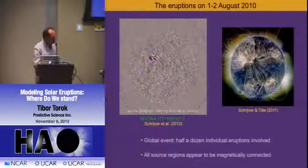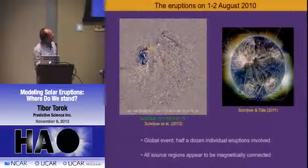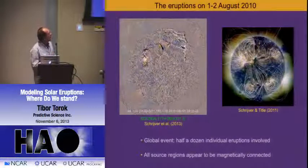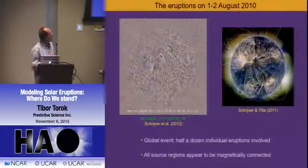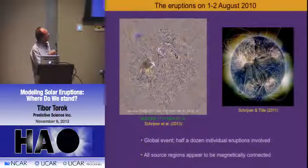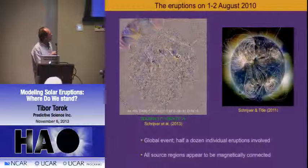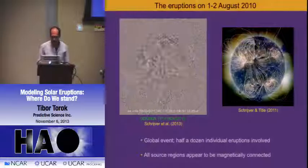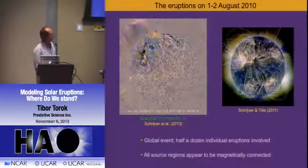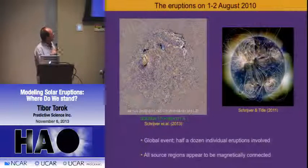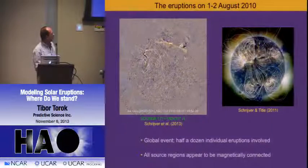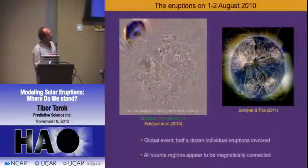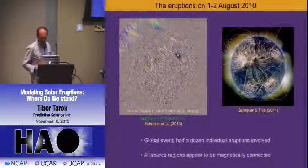We tried to develop a model based on simulations. We were inspired by events on August 1st and 2nd, 2010—you may have seen these movies, Alan Taitl likes to show them. There is a recent paper by Schrijver et al. with a link where you can download these movies. They looked at this event in a lot of detail: it was six eruptions within something like 22 or 23 hours. They did potential field extrapolations and found that all the source regions seemed to be magnetically connected.